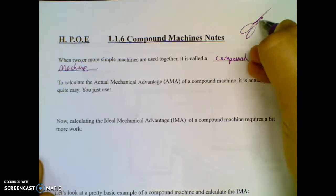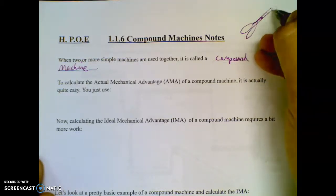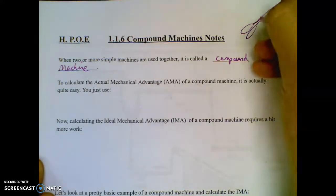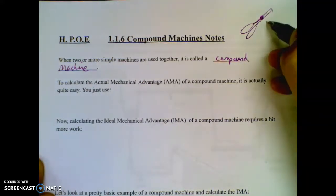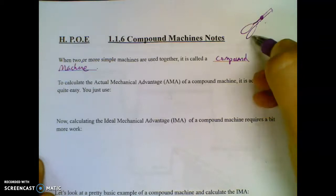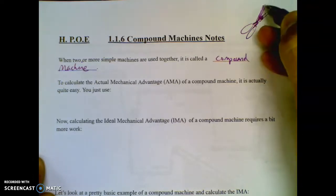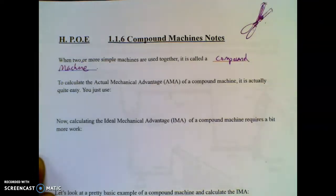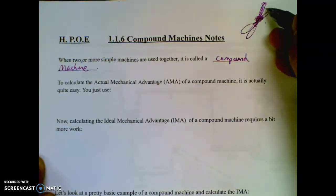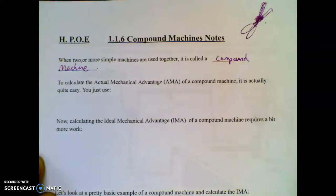So we have our scissors here. I drew them closed, but the fulcrum's right there in the middle. When you open them and close them, you got a lever going on. It's kind of like tweezers. You have one side going this way and one side going that way. But what you might not have thought about is that you're using wedges.